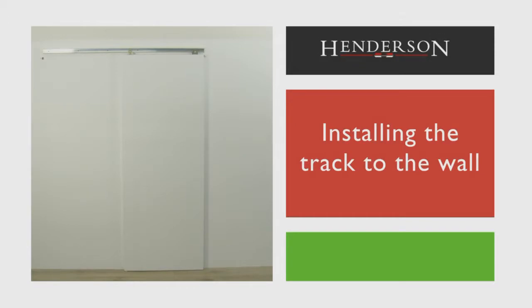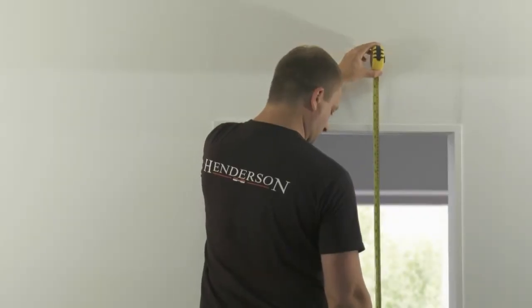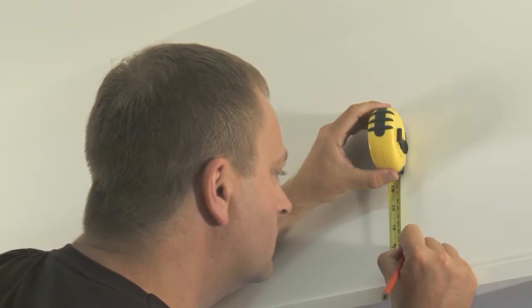Installing the track to the wall. Measure the location of the track height from the floor and clearly mark out with a pencil.